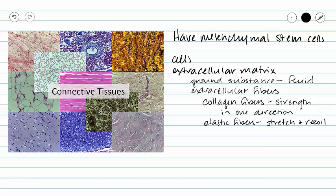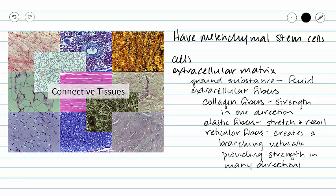We also have elastic fibers, which provide stretch and recoil. And finally we have reticular fibers, which provide a branching network that provides strength in many directions. While our collagen fibers normally stain pink, our elastic fibers generally stain dark purple, and our reticular fibers can stain either a dark brown-black or light blue.